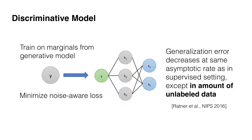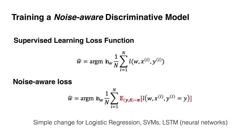The big finding from the data programming paper, which lays out the theoretical foundations for Snorkel, is that our generalization error associated with supervised learning is the same in our data programming context, except it's in the amount of unlabeled data. We take these marginals, feed them in, and minimize a noise-aware loss function. Our input is only labeling functions. This noise-aware loss is really the only difference on the discriminative model side — instead of fitting to hard labels, we're fitting to the expectation of our provided noise-aware labels.